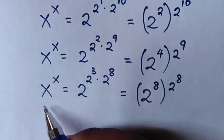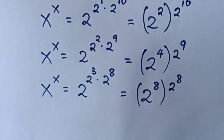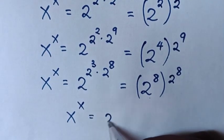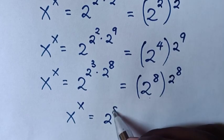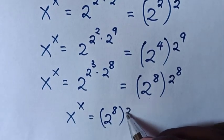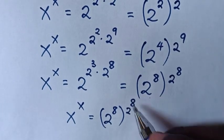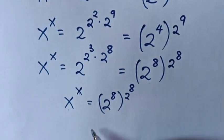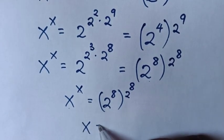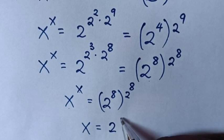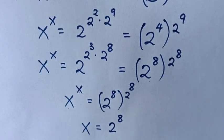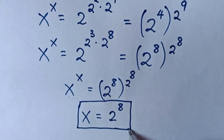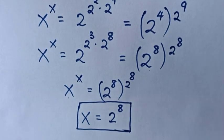Then we compare: x^x = 2^8 bracket 2^8. Because they have the same base and same power, therefore x is equal to 2^8. This is our final answer for the value of x. Thank you for watching.